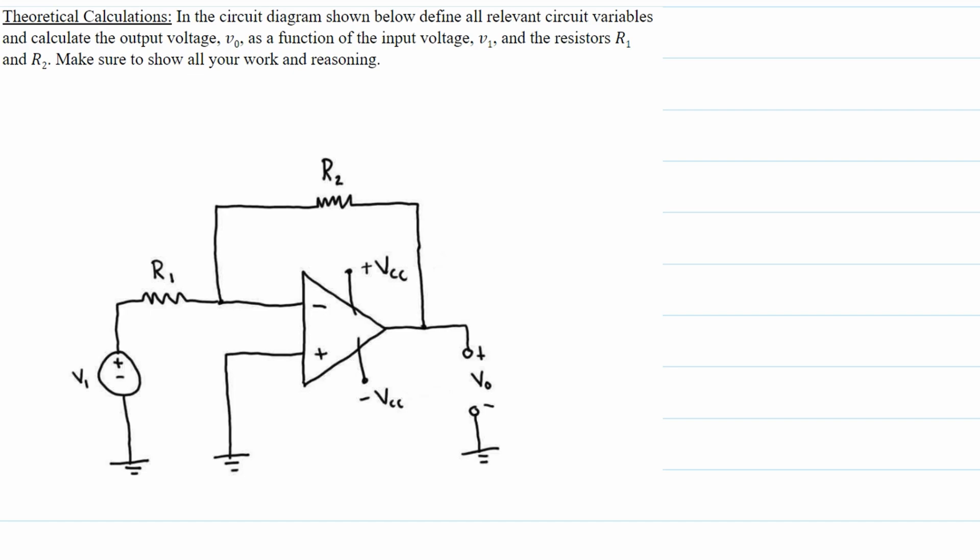In this pre-lab problem, we need to solve for theoretical calculations. In the circuit diagram shown below, we need to define all relevant circuit variables and calculate the output voltage V0 as a function of the input voltage V1 and the resistors R1 and R2.